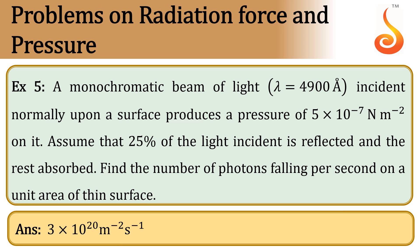Example 5. A monochromatic beam of light, lambda equal to 4900 angstroms, is incident normally upon a surface and produces a pressure of 5 × 10⁻⁷ newton per meter square on it. Assume that 25 percent of the light incident is reflected and the rest absorbed. Find the number of photons falling per second on a unit area of the surface.